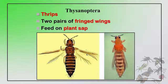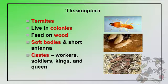Now coming to Thysanoptera, commonly called thrips. They have two pairs of fringed wings and feed on plant sap. Next comes Isoptera, commonly called termites. They live in colonies, feed on wood, have soft bodies and short antennae. There are different castes in the colony: workers, soldiers, kings, and queens.